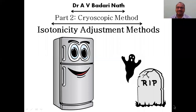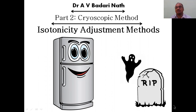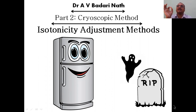In this video we'll see the cryoscopic method for isotonicity adjustment. In the previous video I have already explained how to adjust isotonicity and what methods are available. This is a part two video — see part one first. This method is called the cryoscopic method. Cryo means cooling, refrigerator, freezer.